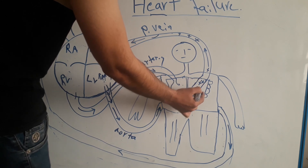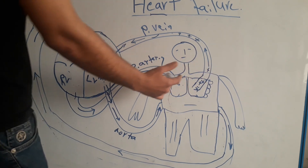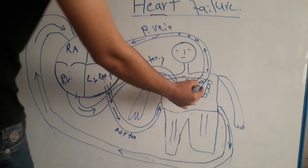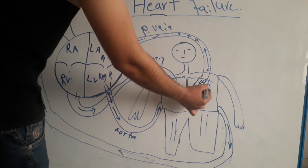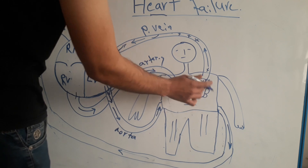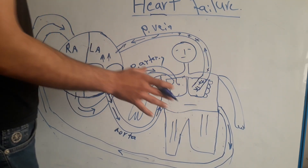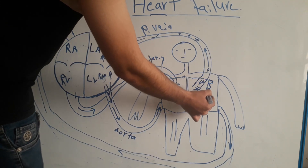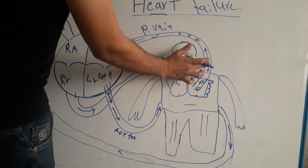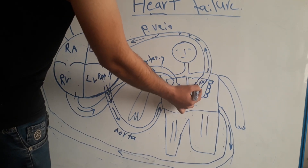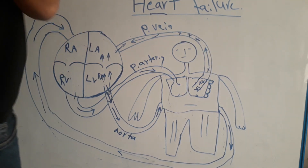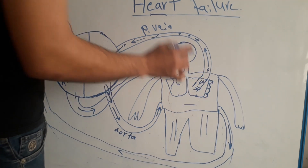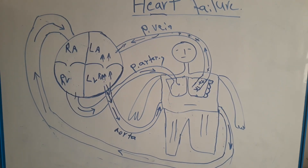The increased hydrostatic pressure inside the pulmonary veins causes fluid to pass from the pulmonary veins into the interstitial space of the lung cells and into the alveoli. This accumulation of fluid in the interstitial space of the lung is called pulmonary edema.